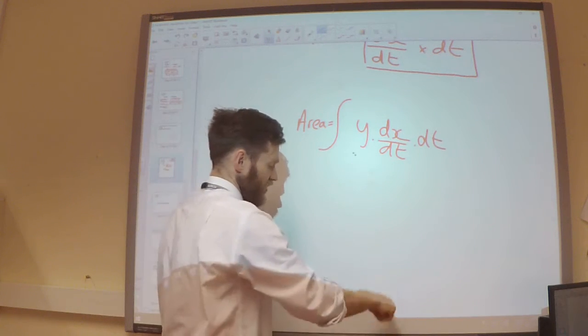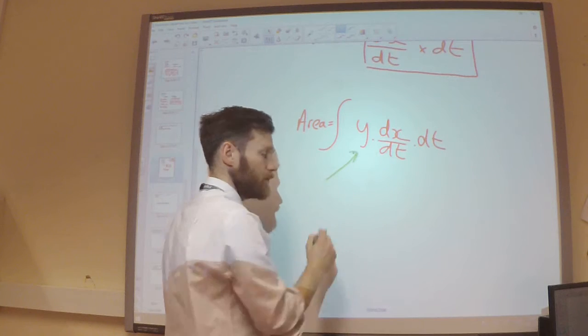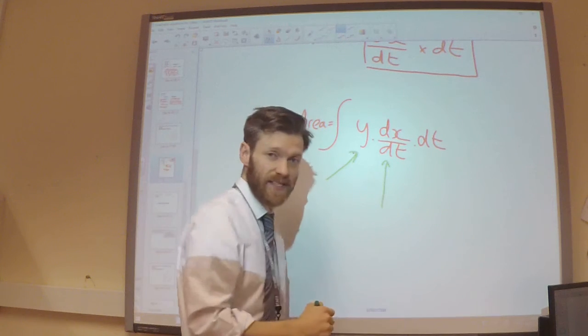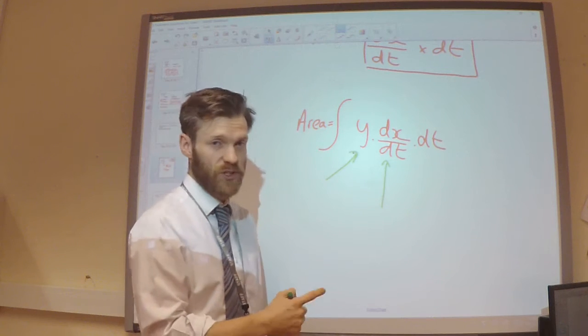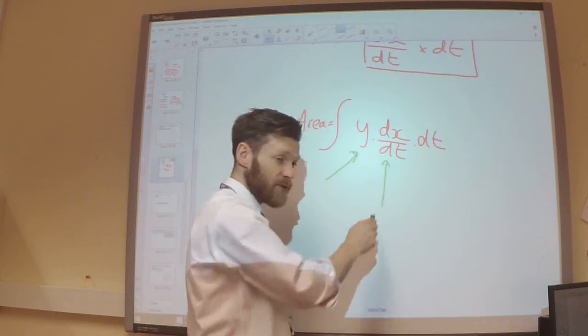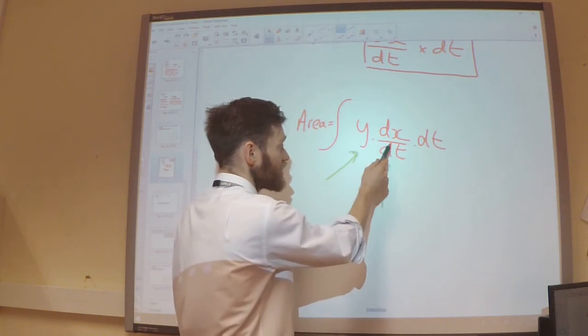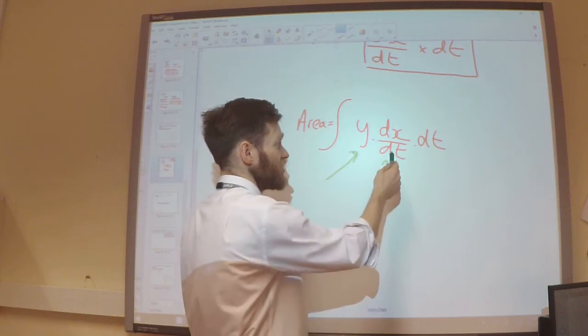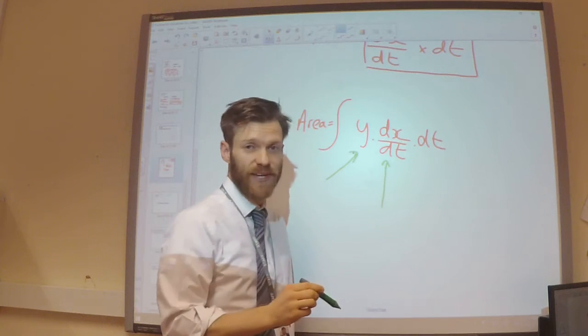I take my y function, which is a function of t. I differentiate my x function, which is also a function of t. I multiply those two things together, and that allows me to then integrate the result with respect to t.